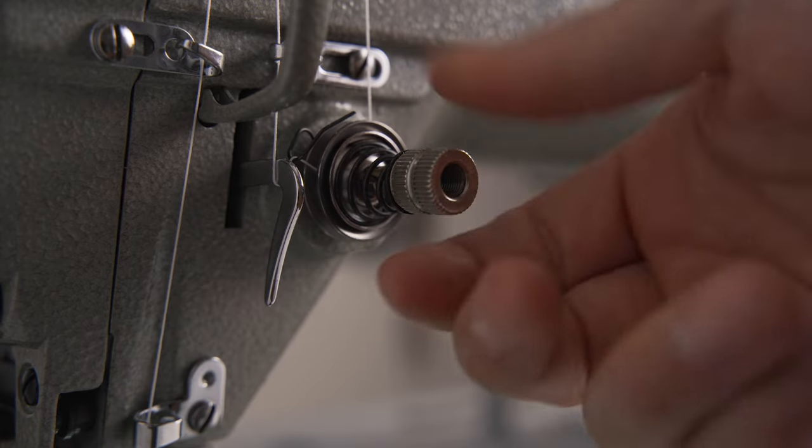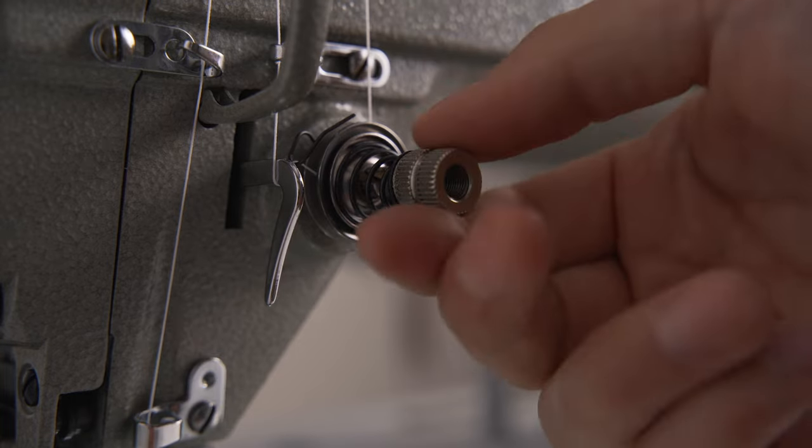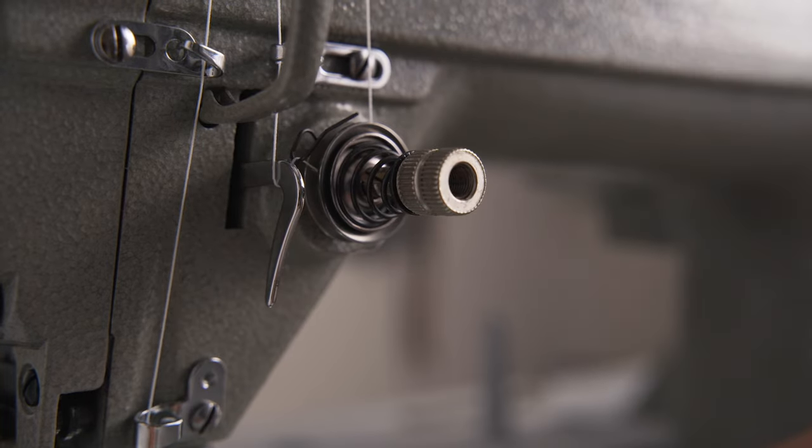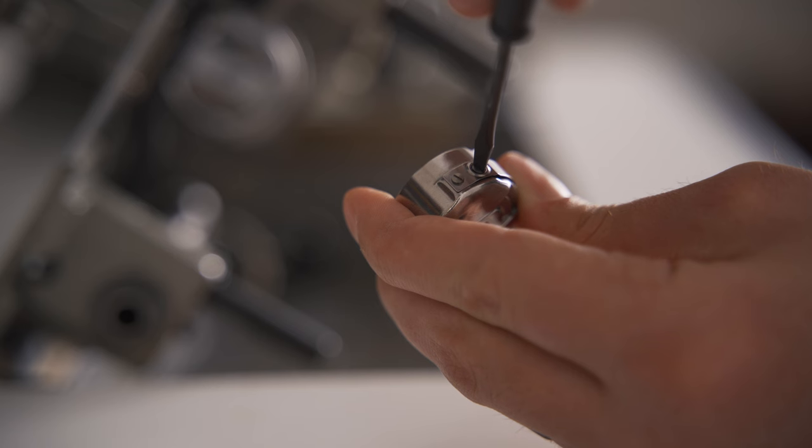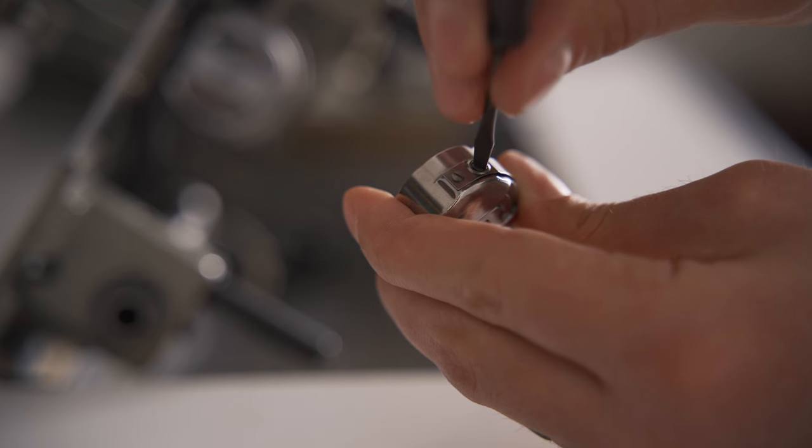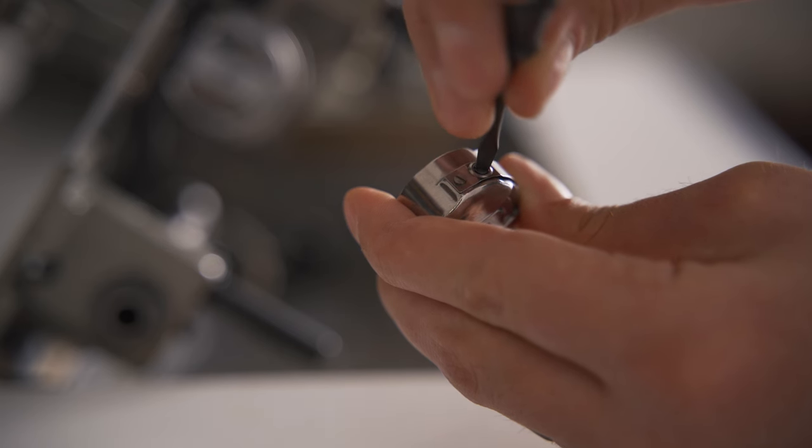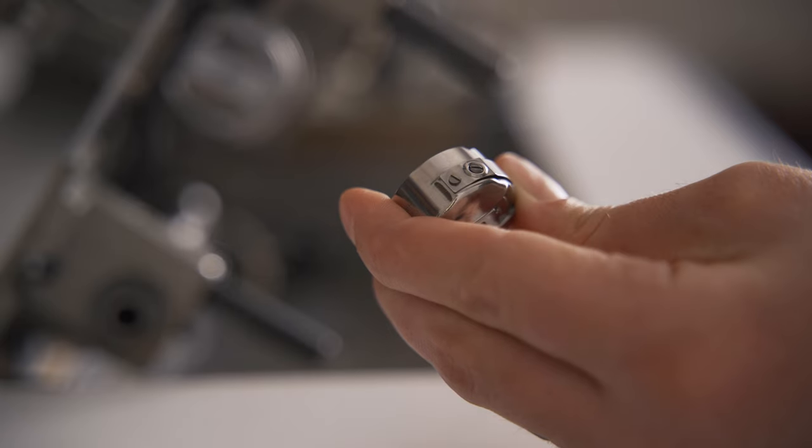To adjust your thread tension, start by adjusting the top thread tensioner. Turn it clockwise to increase tension or counterclockwise to reduce tension. If the issue persists, try adjusting the bobbin case tension by turning the screw on the bobbin case clockwise to increase tension or counterclockwise to reduce tension.